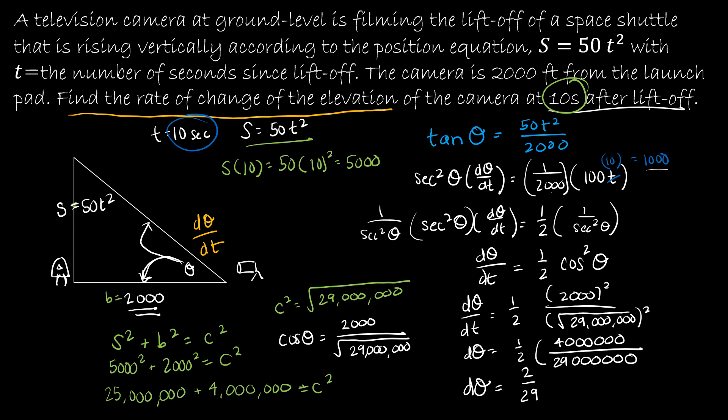So I'm going to label this as radians per second. That is our rate of change of elevation at 10 seconds. Up next, we're going to take a look at relative and absolute extrema.